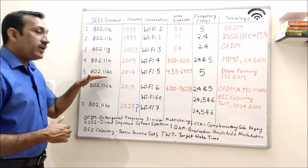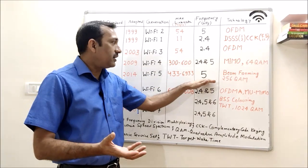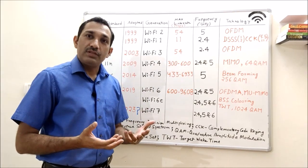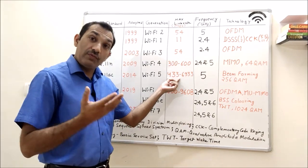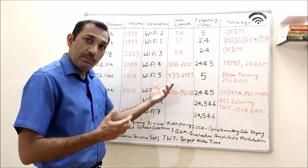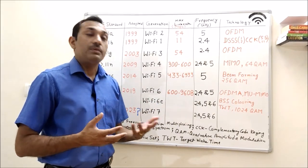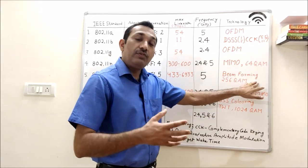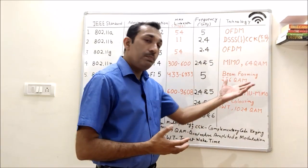Then we move to 11AC. 11AC again moved to only 5 GHz band. Here we had multiple streams. It can support up to 4 streams, and with one stream at 5 GHz we can have throughput close to 400 Mbps, and at max 6933 Mbps. Here new technology came in addition to earlier technologies like MIMO - beamforming.